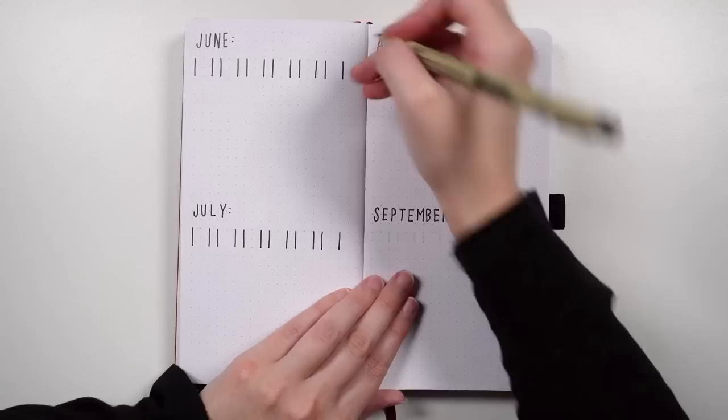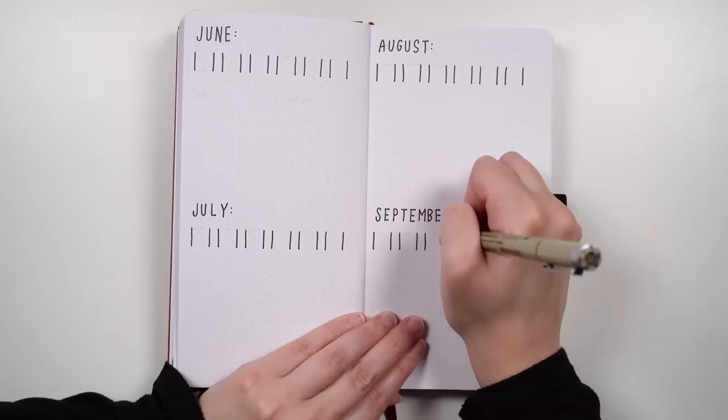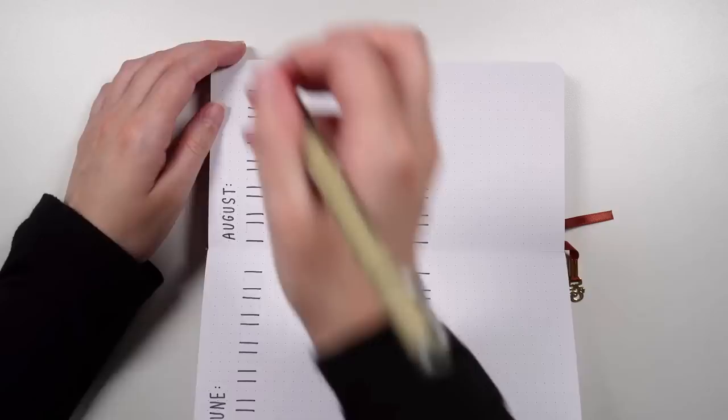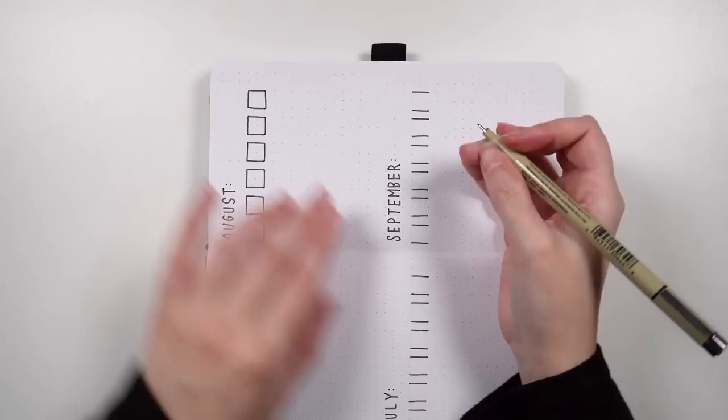The spread is just split into four sections, so two on each of the spreads, and each of those sections is dedicated to one of the months. So June, July, August, and September, because even though September's not in this journal, it's good to plan ahead.